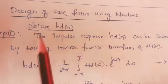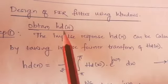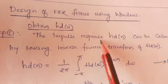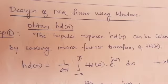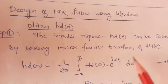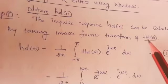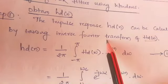First step is to obtain hd(n). hd(n) means the impulse response. The impulse response hd(n) can be calculated from the given transfer function. Transfer function is given in terms of Hd(ω). So how to calculate by taking the inverse Fourier transform.